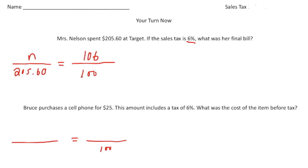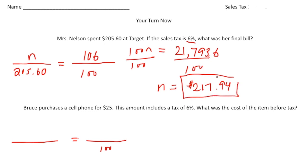So now we can use a little algebra here. So it's going to be n times 100 is 100n. And that's going to equal 205.6 times 106 gives us 21,793.6. And then when I divide both sides by 100, we end up with a cost of $217.94. I rounded that to the nearest penny. So that right there is the total cost, including the 6% sales tax.